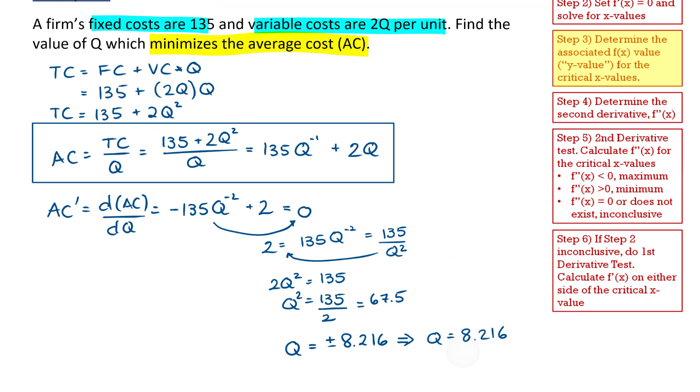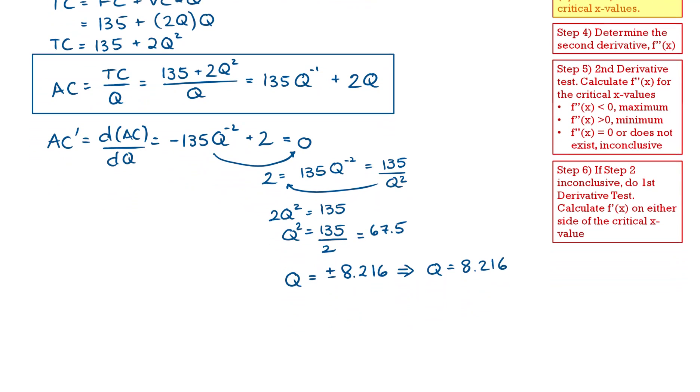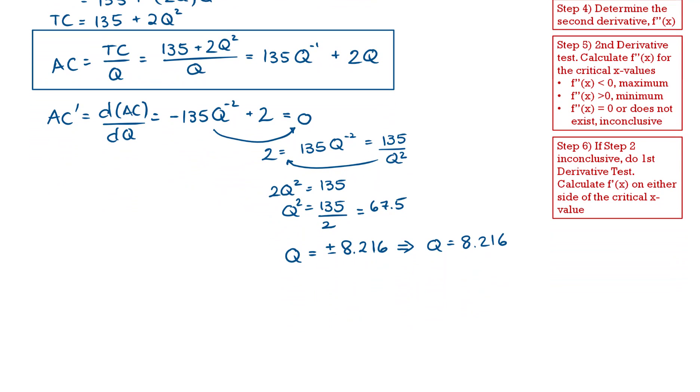Our next step for this problem is to determine the associated vertical axis value. The average cost associated with Q is equal to 8.216. So average cost is going to be equal to 135 Q to the power of negative 1 plus 2Q.